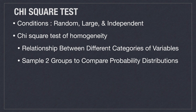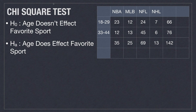The chi-square test is going to test for homogeneity and is used when you want to look at the relationship between different categories of variables. It is used when you sample from two groups and want to compare their probability distributions. In this specific example we're trying to find if the age of a viewer has any effect on their preferences for a favorite sport, where the null hypothesis is that age doesn't affect favorite sport.